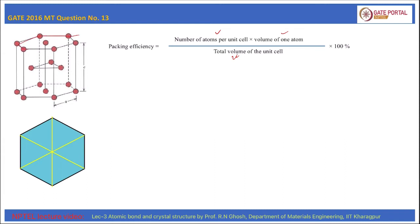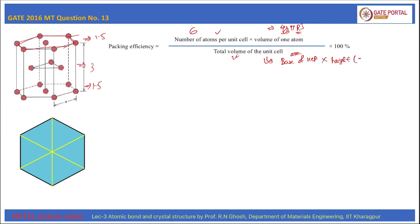For an HCP unit cell, we have a total of 6 atoms per unit cell: 1.5 atoms from the top plane, 3 atoms from the middle plane, and 1.5 atoms from the bottom plane. The volume of one atom is (4/3)πr³, where r is the radius of one atom.